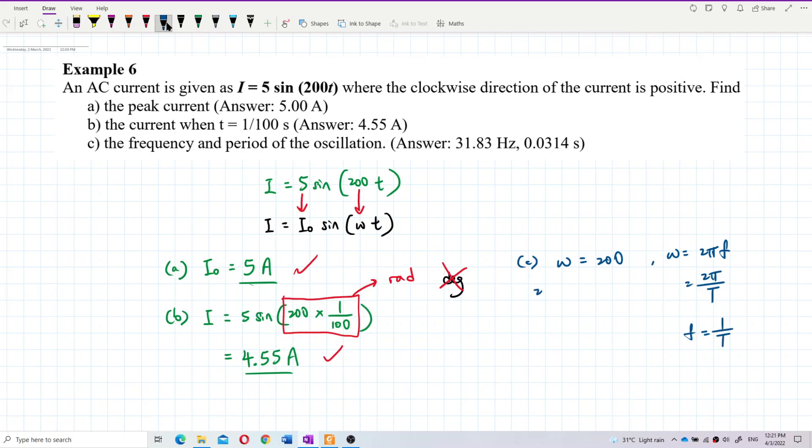We know frequency is 1 over period, right? So let's change it. Omega is 2 pi f, and then the frequency is 200 divided by 2 pi.